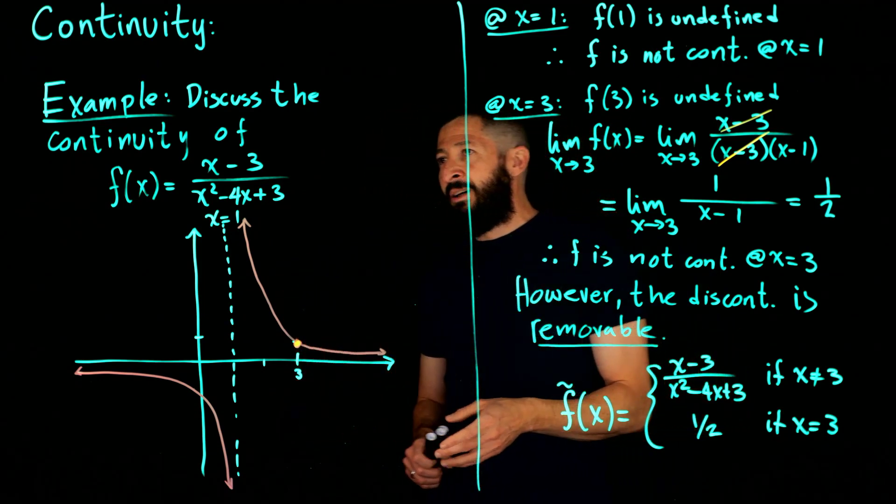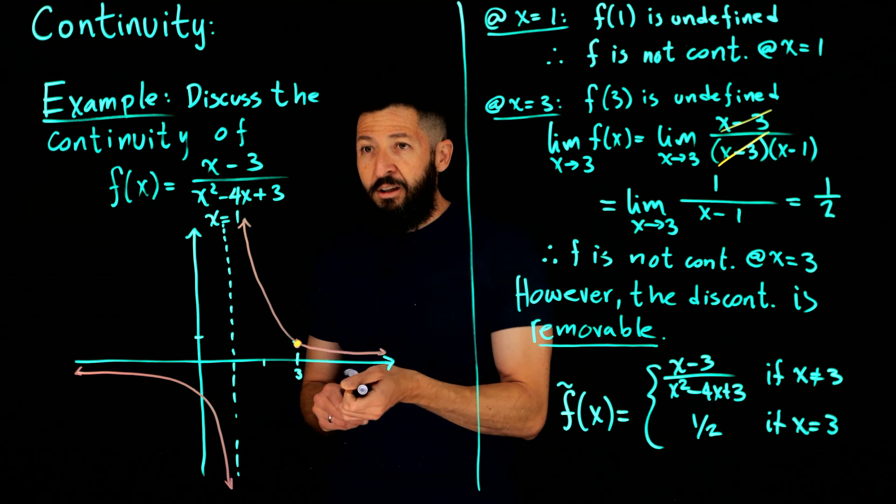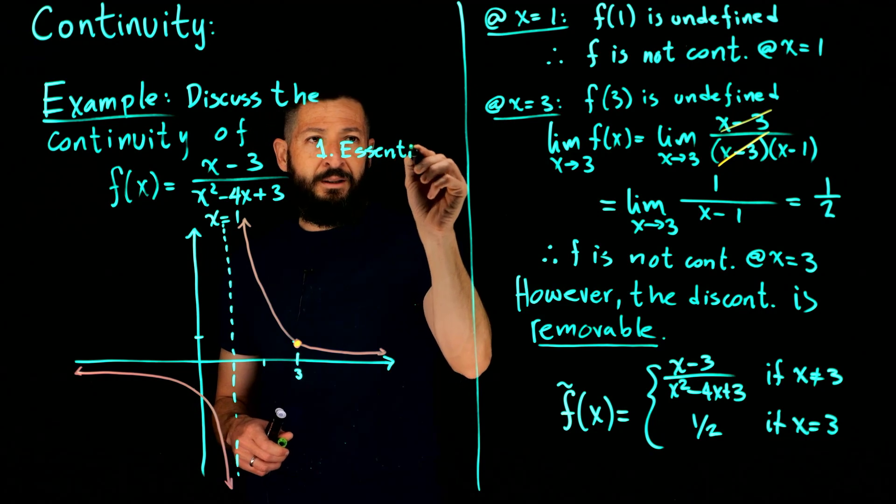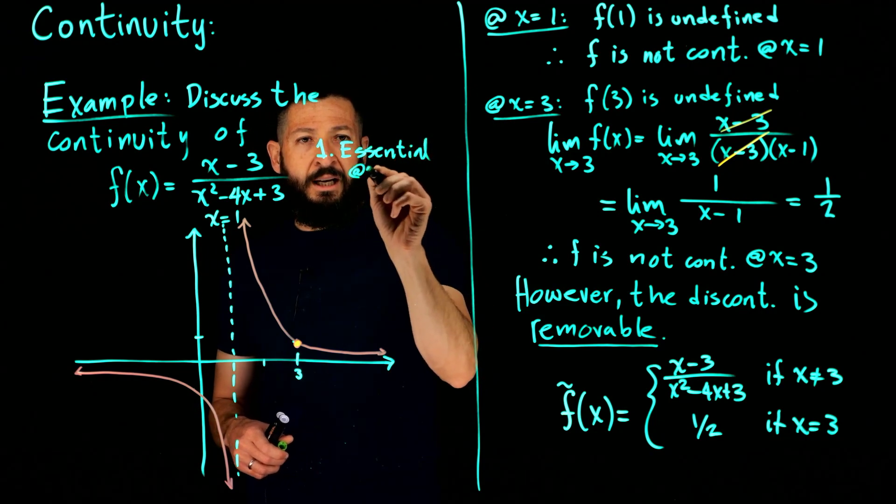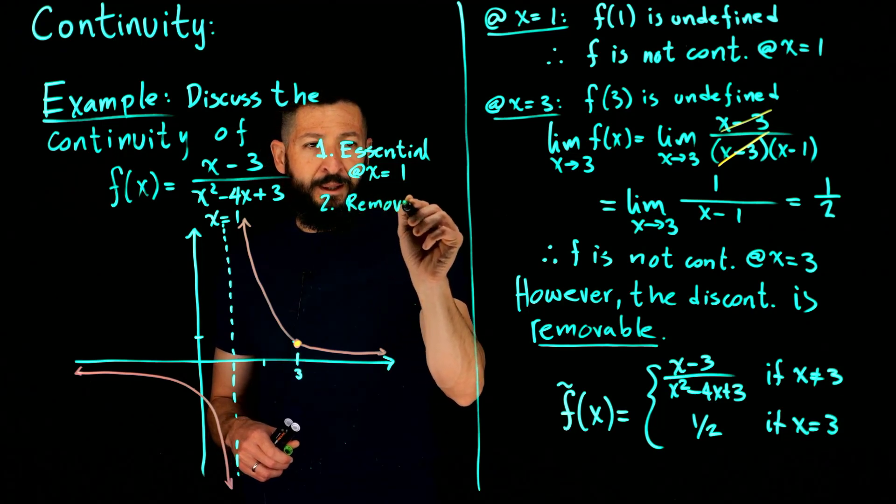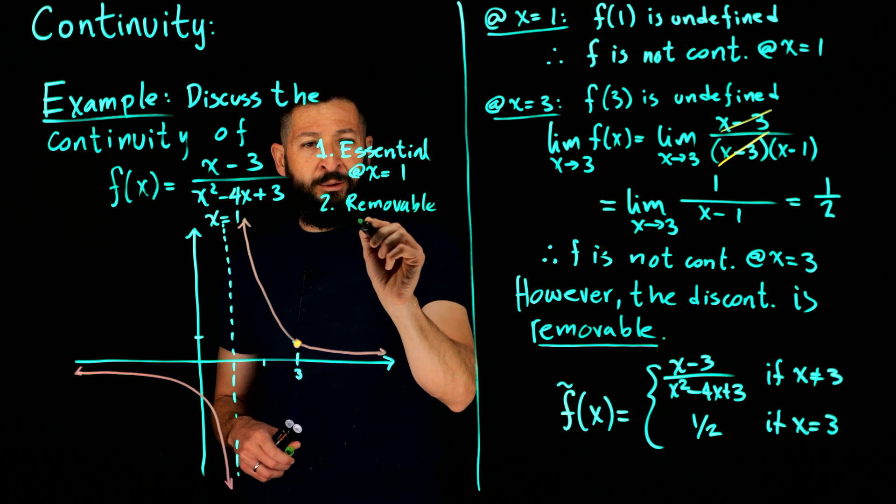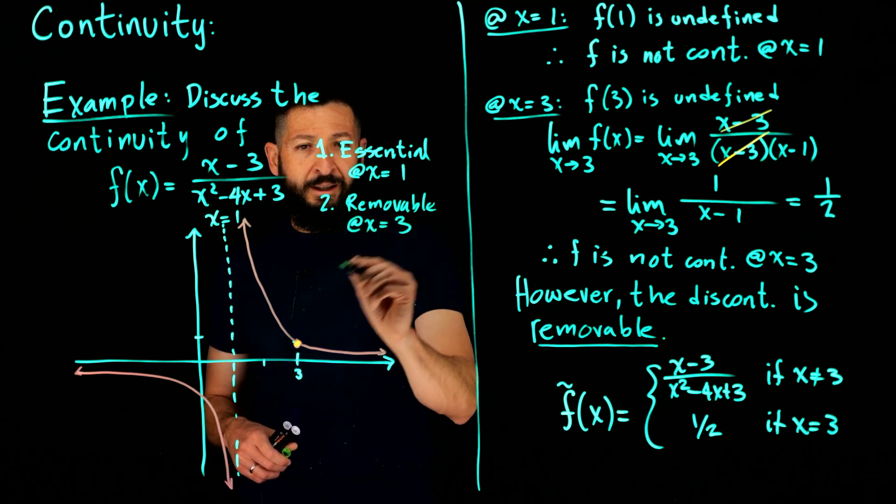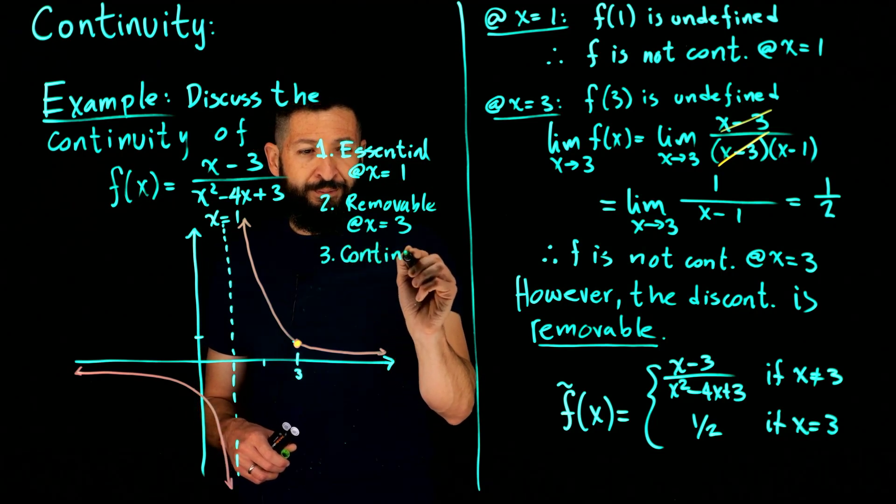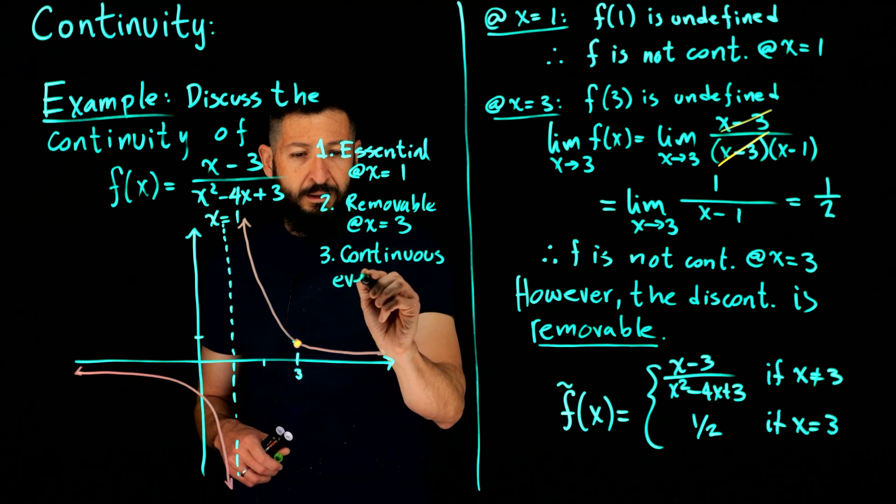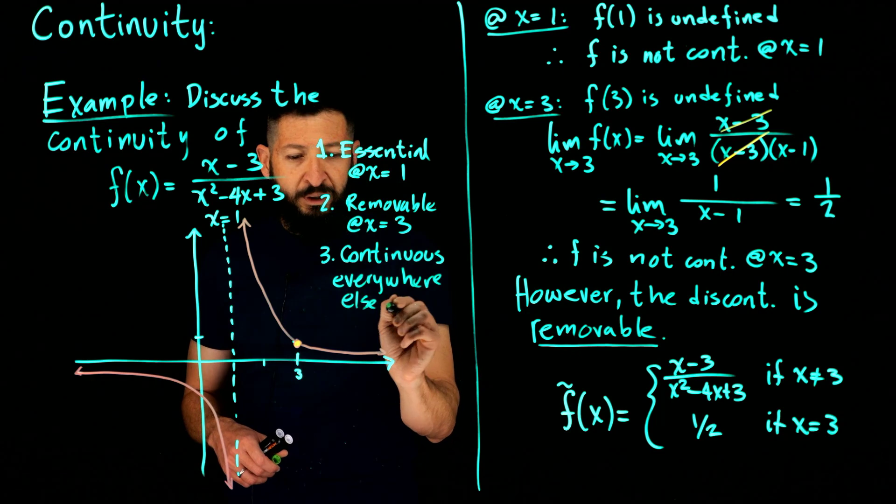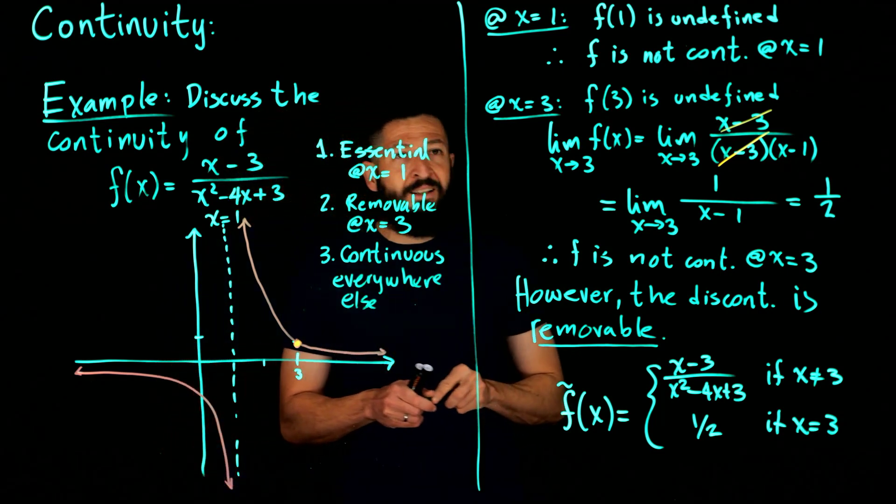So what can we say about the continuity of this function? So you have an essential discontinuity at x equals 1, removable discontinuity at x equals 3, and don't forget this one, it's continuous everywhere else.